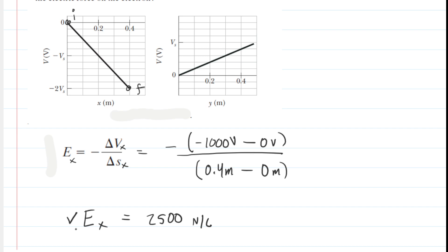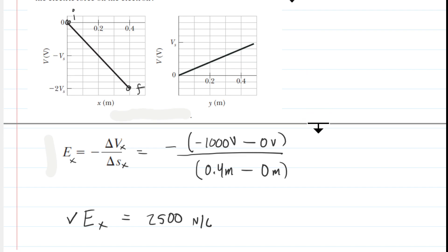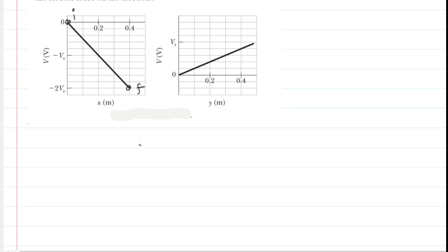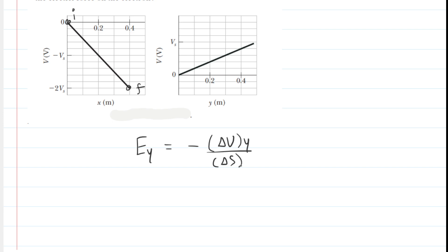We will use that soon to calculate the force acting on the electron in the x-direction, but first we need the electric field in the y-direction. It's going to be a very similar calculation: the electric field in the y-direction equals the negative change in potential in the y-direction over change in position in the y-direction. Let's select the origin again as our initial point. The final point is going to be right here. We can choose that as our final point because this is a nice constant slope while the electron moves along the y-axis, so we can really choose any two points.